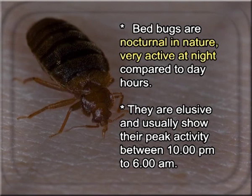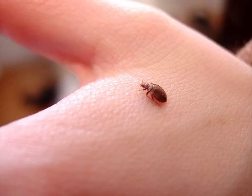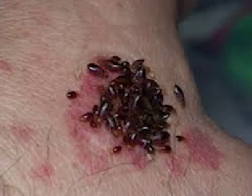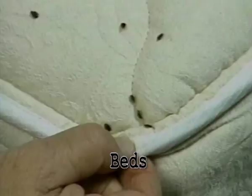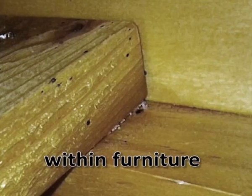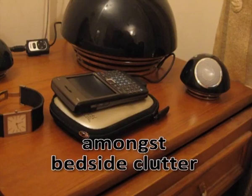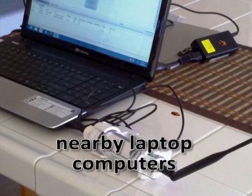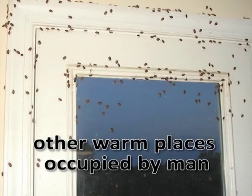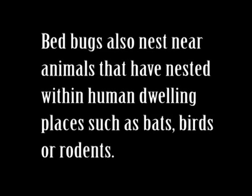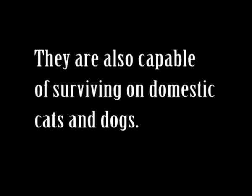They are elusive and usually show their peak activity between 10 pm to 6 am. Bed bugs occur singly or in aggregations. They are found commonly in or near beds, luggage, inside vehicles, within furniture, amongst bedside clutter, inside electrical sockets and near laptops, computers and other warm places occupied by humans. Bed bugs also nest near animals that have nested within human dwellings such as bats, birds or rodents. They are also capable of surviving on domestic cats and dogs.